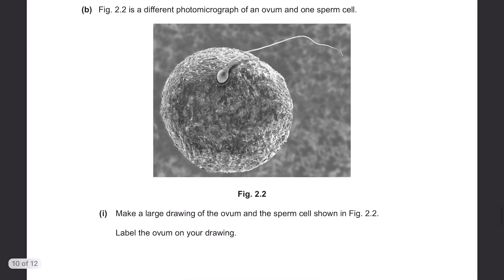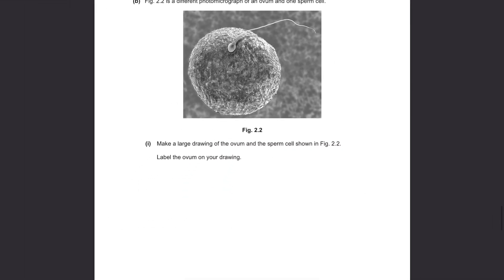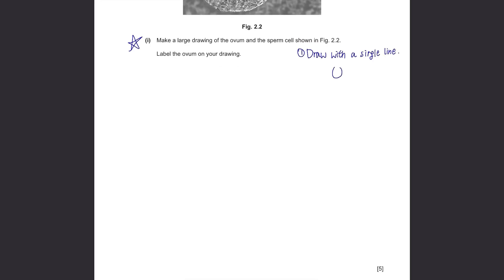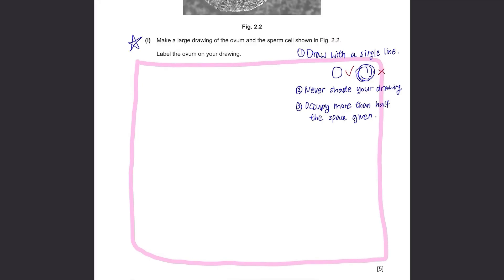Figure 2.2 is a different photomicrograph of an ovum and one sperm cell. Make a large drawing of the ovum and the sperm cell shown in figure 2.2. Label the ovum on your drawing. Drawing diagrams is one of the trickiest questions in paper 6 as they have very strict rules. Firstly, you need to draw with a single line for example, like this. If you draw it with many lines going over one another like this, it's wrong. Also, never shade your diagrams even if the photo given looks dark or something. Another rule is that you need to occupy more than half the space given here. It needs to be pretty big, don't draw it too small but of course, don't go over the given space.